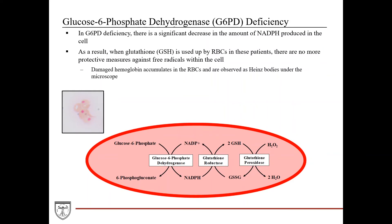If G6PD is deficient, there is significantly less NADPH produced, which substantially inhibits the protective glutathione pathway in red blood cells. When glutathione is used up, there are no more protective measures against free radicals. One result of excess free radicals is that hemoglobin gets damaged and accumulates in red blood cells, observed under the microscope as Heinz bodies — dense circular pink-colored structures. Heinz bodies help differentiate G6PD deficiency from pyruvate kinase deficiency, where they are absent.